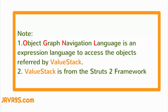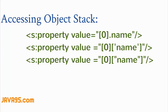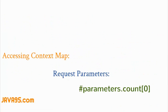Let's see how to access values from the value stack using OGNL expressions. To access objects in the object stack, you can use the index and the name of the property. However, 99% of the time we will never use index-based syntax because we don't know at which index an object is present. It is better to use the attribute name to access a particular object. The key point is that objects are stored in a stack accessible by index — I'm just showing you this syntax, but most of the time it isn't used.